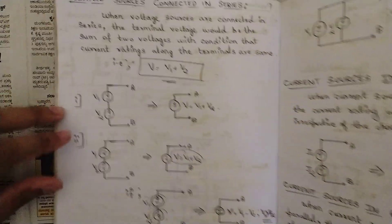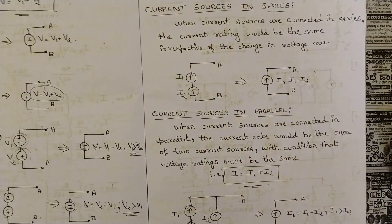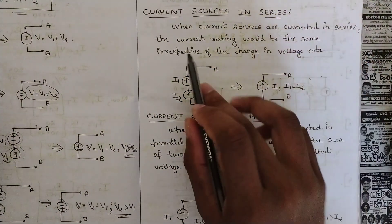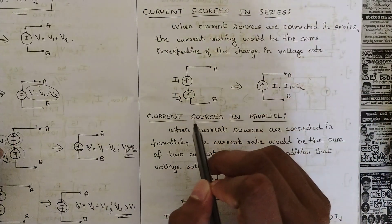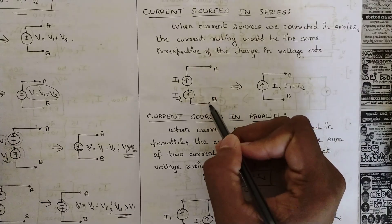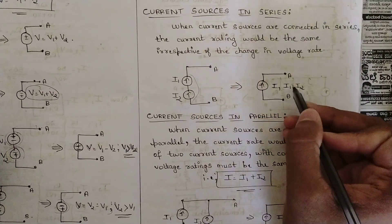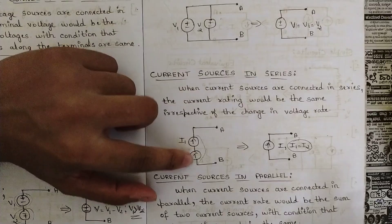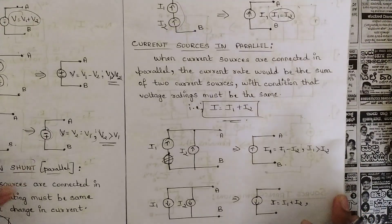The two parameters you need to keep in mind are: voltage sources connected in series, and current sources connected in parallel. Those two you should understand thoroughly because they are the most important for solving problems. Regarding current sources in series: when current sources are connected in series, the current rating would be the same irrespective of the change in voltage, similar to how voltage sources in parallel work.